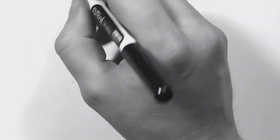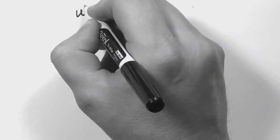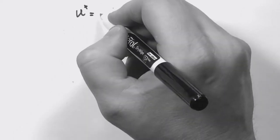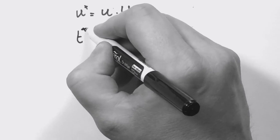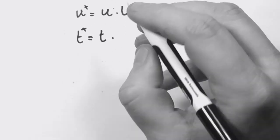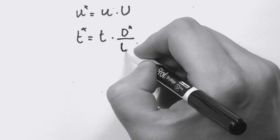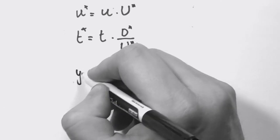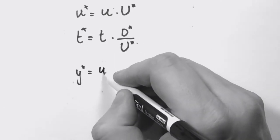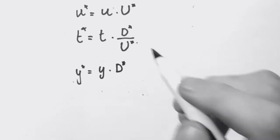To do that we write, for example, u the velocity as the non-dimensional u times big U. We know the big U is the streamwise velocity, uniform velocity that encounters the sphere or the cylinder. Then time is scaled as t times D divided by U*, and the coordinate y is y times D*.